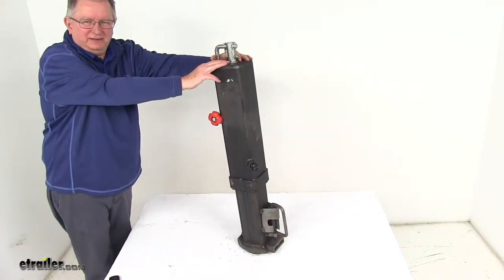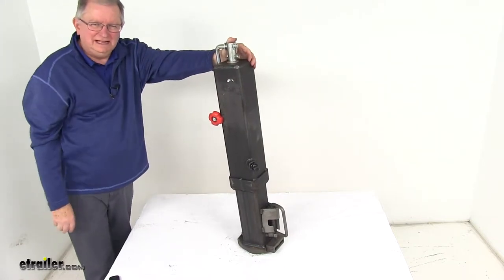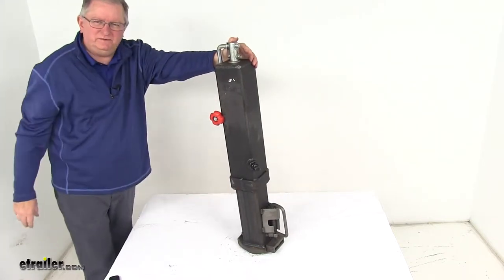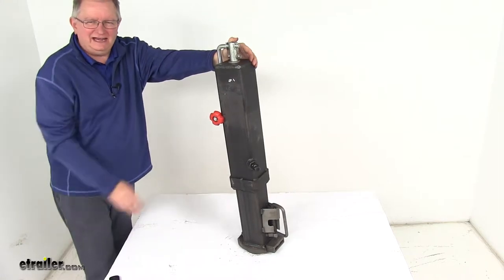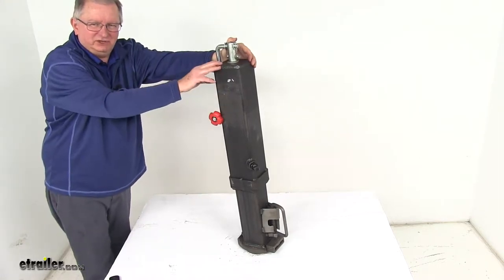This gooseneck coupler will let you hook your gooseneck trailer up to your tow vehicle. The coupler is designed to fit a 2 and 5/16ths gooseneck ball, and it has 6 inches of height adjustment to fit your application.